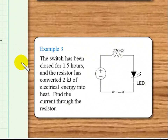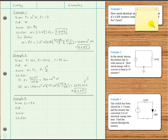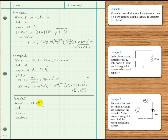In this example, we're told the switch has been closed for 1.5 hours, and in that time the resistor has converted 2 kilojoules of electrical energy into heat. Find the current through the resistor. Given: time is 1.5 hours, which we convert to seconds — 1.5 times 3600 equals 5400 seconds, or 5.4 times 10 to the third seconds. We're also given energy W equals 2 times 10 to the third joules.